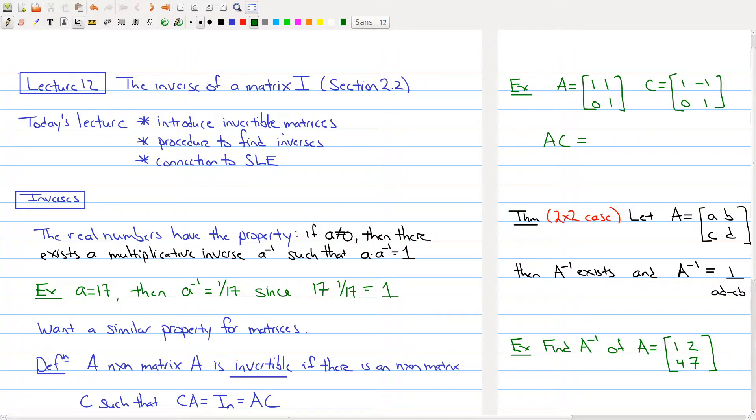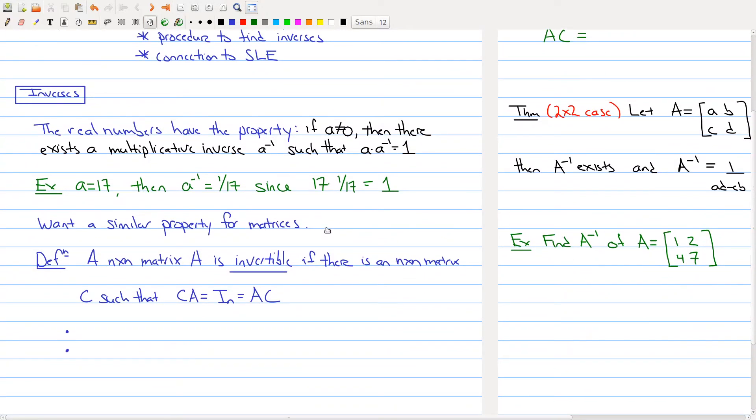This property that the real numbers have, that every element has a multiplicative inverse provided you're not zero, is the property that we want to develop for matrices. That's our goal; we want a similar property for matrices. To help us with that goal, let's introduce some terminology.